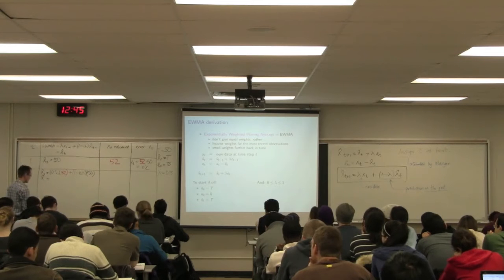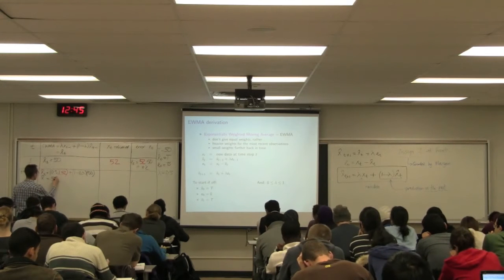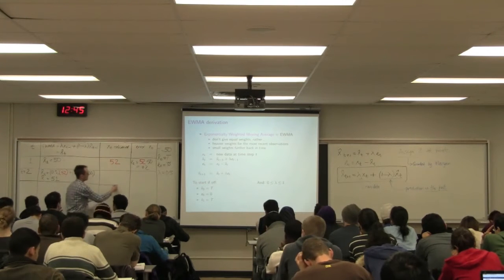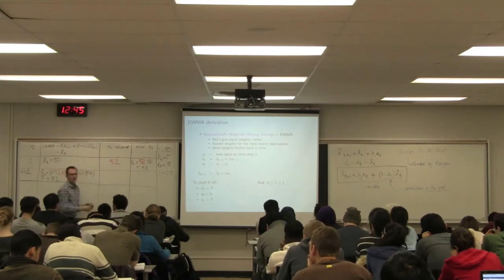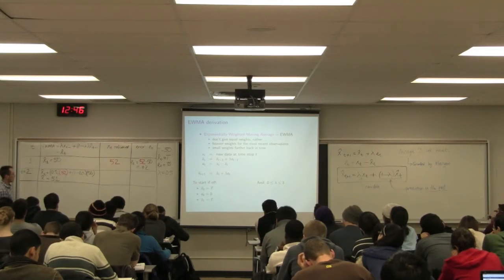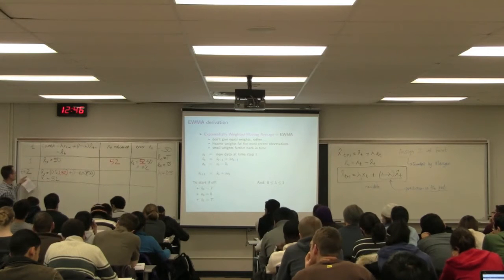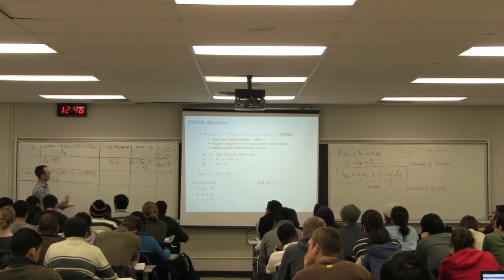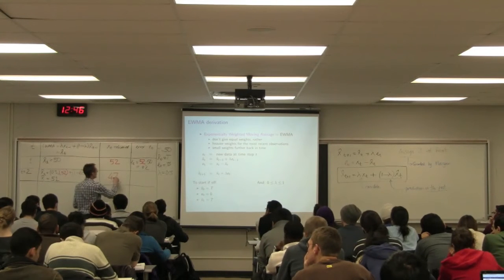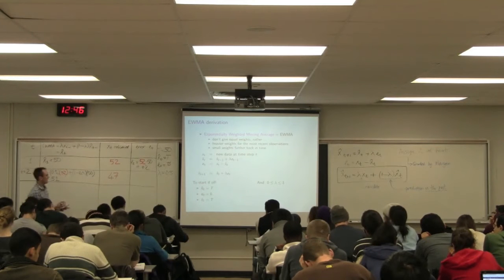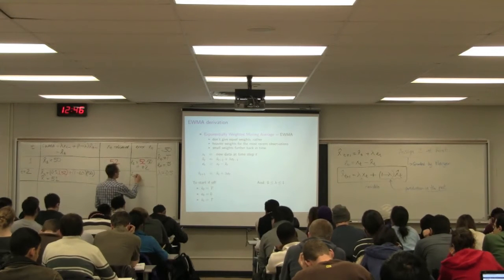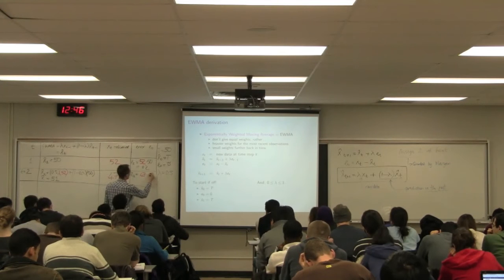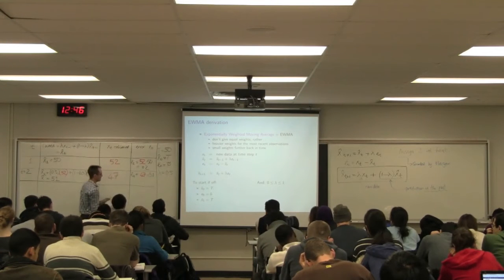So x hat 2 is equal to 51. So I've made a prediction one step into the future. Now I go to my process at time 2. I measure a sample and I take an observation and I see, well, my actual viscosity was 47. So the error that I had at 2 is equal to observed minus predicted. 47, I predicted a value of 51. So that's an error of minus 4.